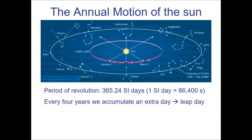How long does one orbit take? The period of revolution — the time it takes Earth to complete one full orbit about the sun — is 365.24 days, where those days are solar days of 86,400 seconds. Notice that is not a whole number, and we shouldn't expect it to be. It's actually a bit odd that we use Earth's rotation to keep track of how long it takes Earth to orbit, since those two things are unrelated. The day and the year have no direct relationship, so getting a decimal is not surprising.